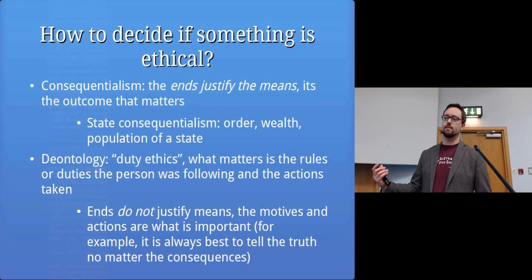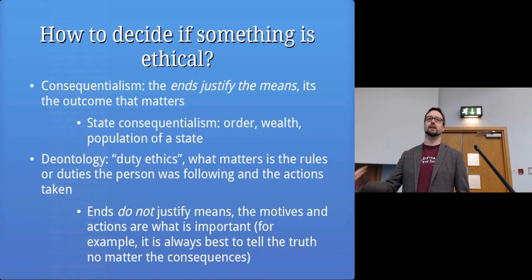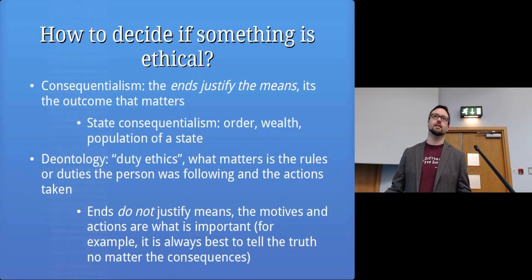State consequentialism is where we do whatever it takes to improve our own nation - its order, wealth, and population. For example, you might go to war with someone else and possibly kill those people in order to secure and keep ourselves safe, even though more people might end up dying than if we surrendered.